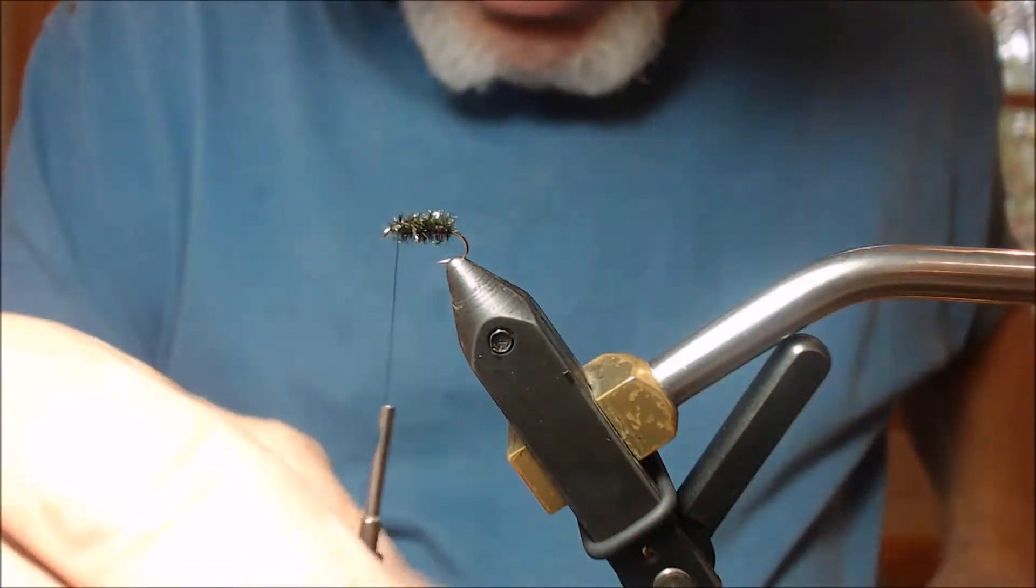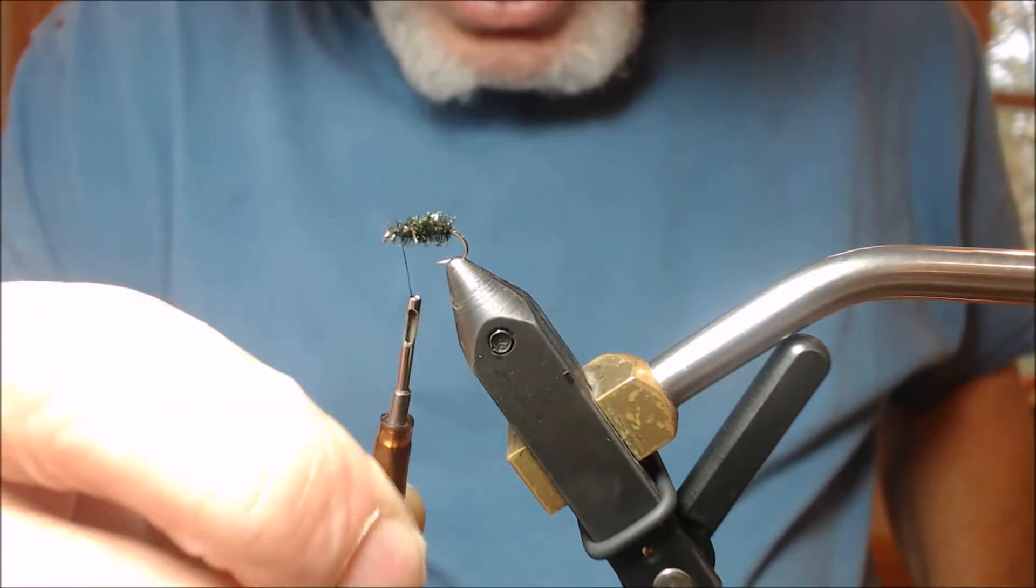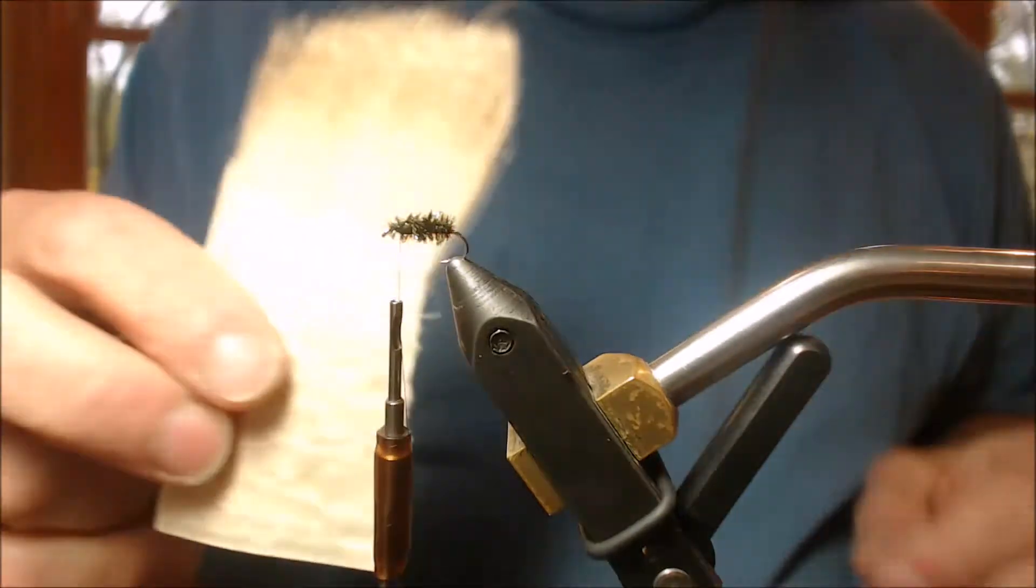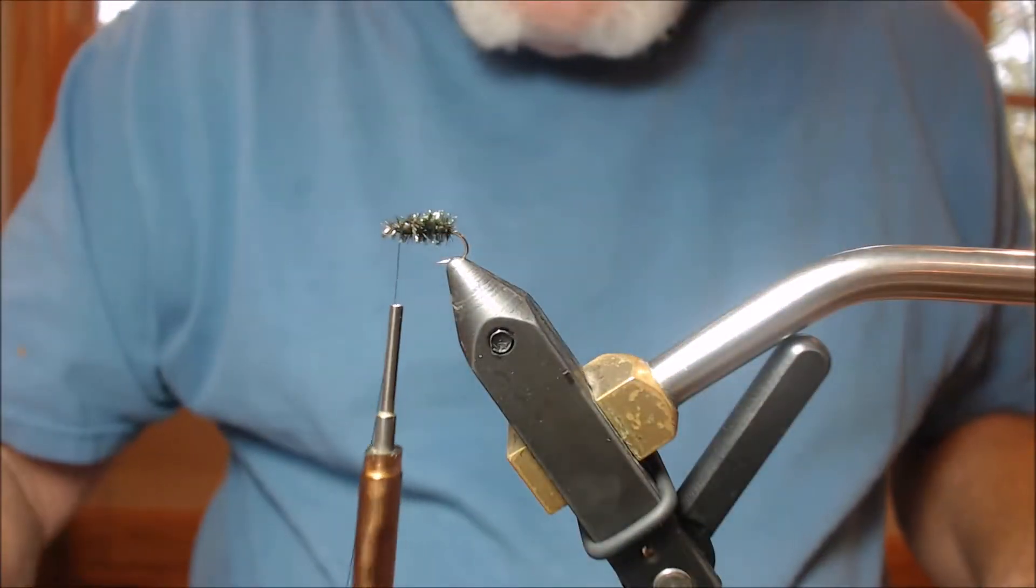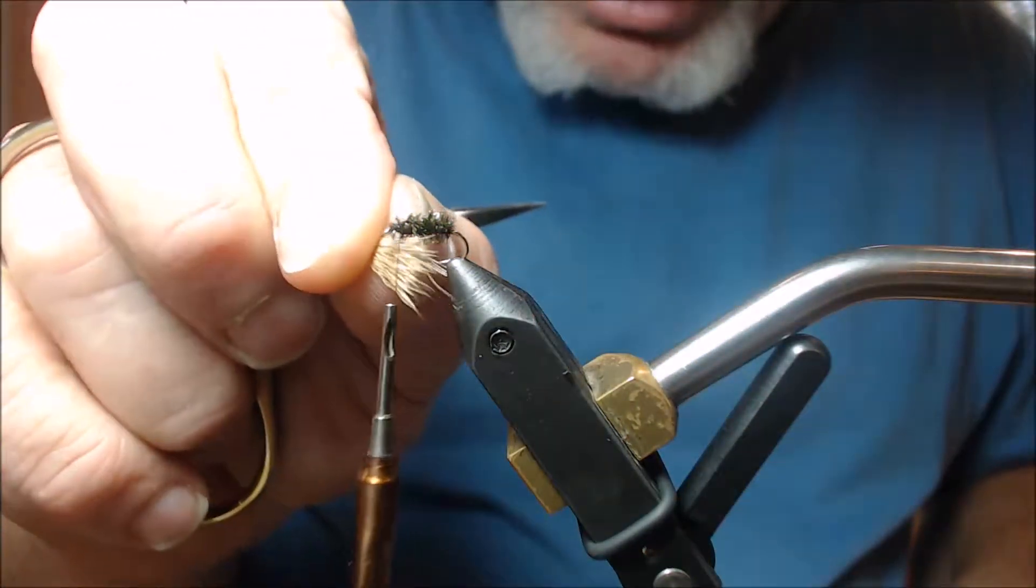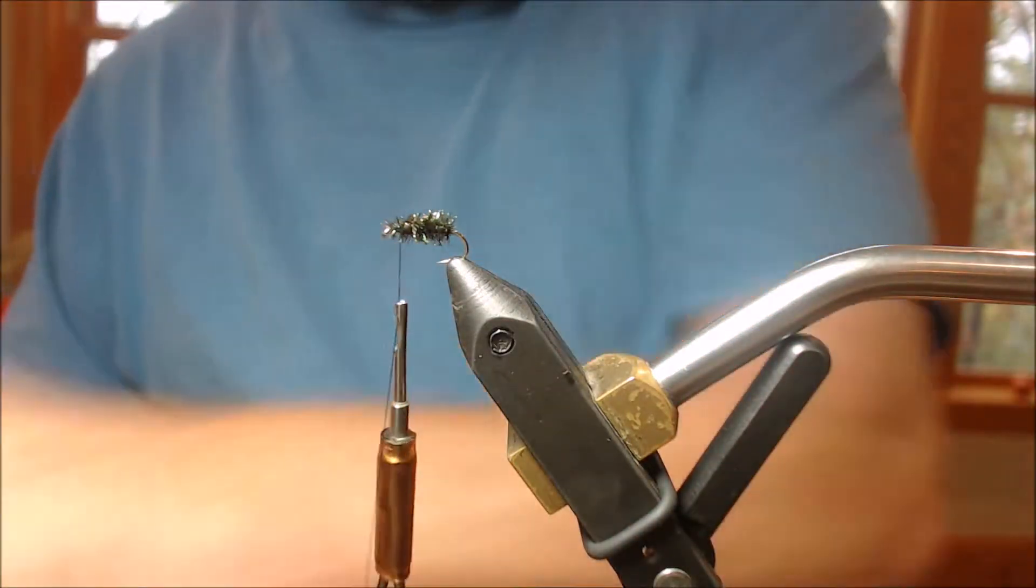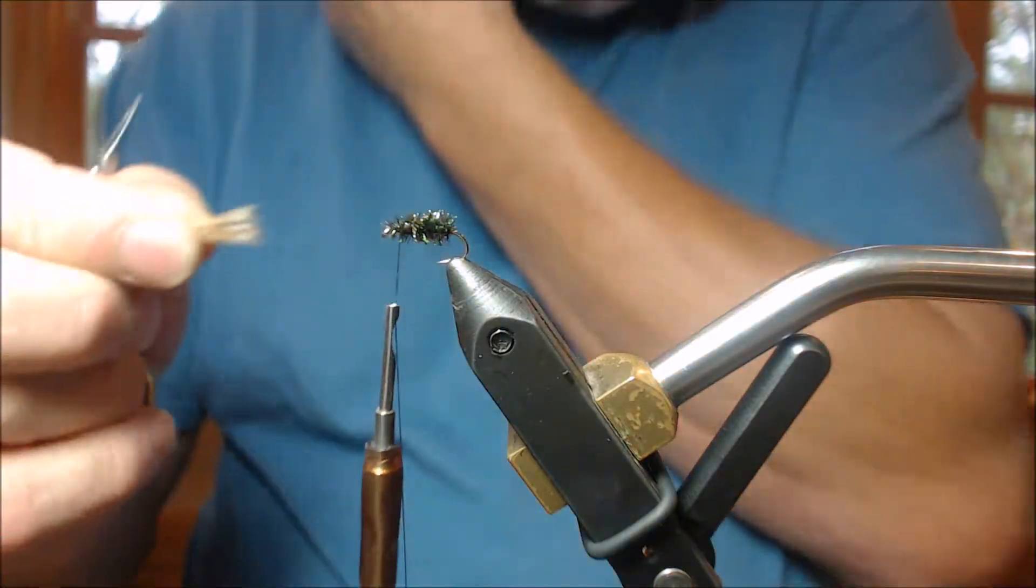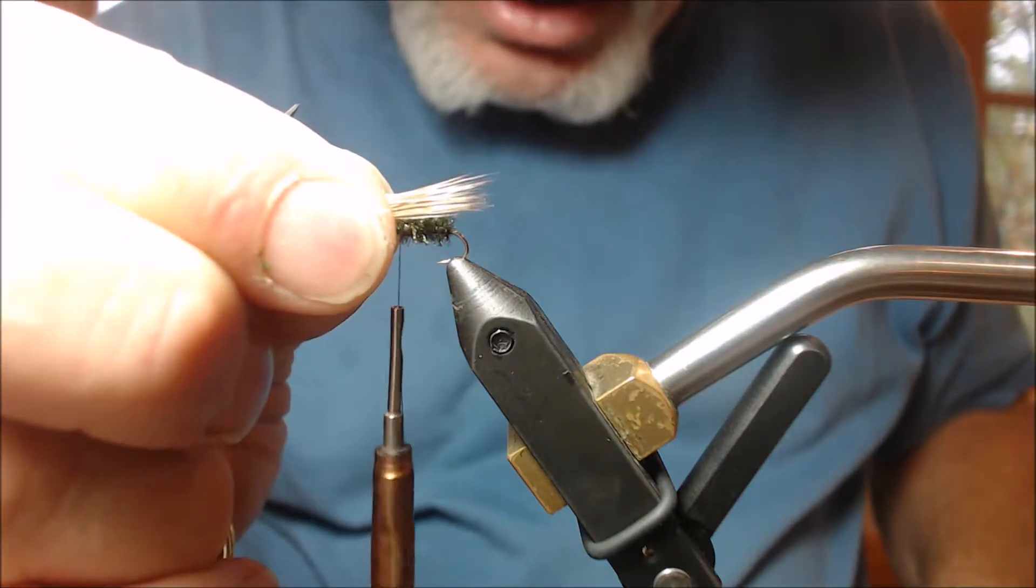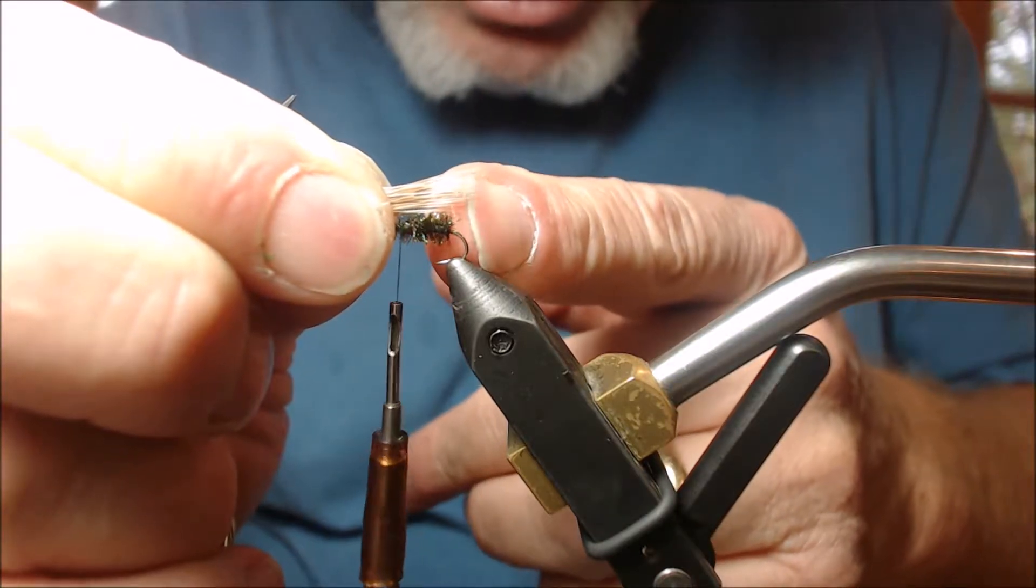Now I'm going to cut this peacock off and wrap right back over it and wrap backwards for about two eyes back. And now I'm going to tie on some bleached hair. The way I like to do it is I like to choose it about the width of my bend and stack it in my hair stacker. The ends are evened up, and I'm going to tie this in just a bit at the bend coming up.